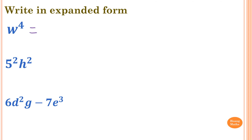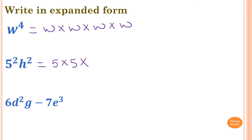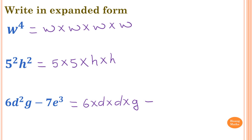W to the power of 4 is equal to W times W times W times W. And 5 squared times H squared is 5 times 5, and H times H. Last one: 6 times D squared times G, which is 6 times D times D times G, minus 7E to the power of 3, or 7E cubed, which is 7 times E times E times E.